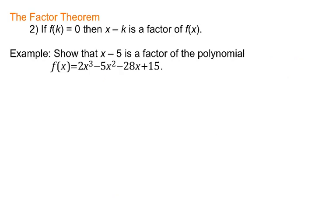Reading it the other way is a little bit different. This one says that if f(k) equals 0, then x minus k is a factor of f(x). We want to show that x minus 5 is a factor of this polynomial. We may feel anxious because we have not done much with factoring polynomials that have degree of 3 or more. This will not factor by grouping.